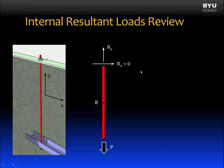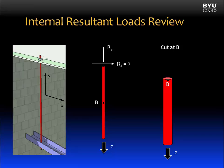Let's pick an arbitrary point, call it B, and find the internal resultant loads at B. We're going to cut it there and draw a free body diagram of the cut member. At the cut surface, we're going to apply our three internal resultant loads: a normal force, an internal shear, and an internal moment.